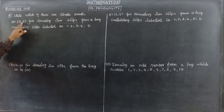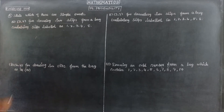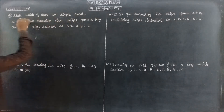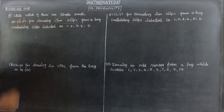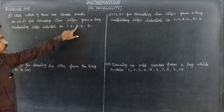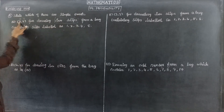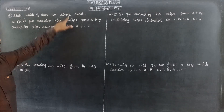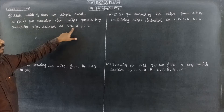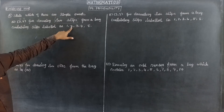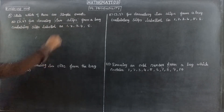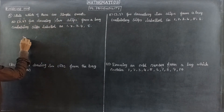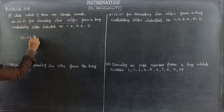So first paper is 3, second is 2. So 2 slips taken out: first one is 3, second one is 2. So there is one possible outcome. This is a simple event - yes, it is possible. So 3,2 - simple event is indicated yes.